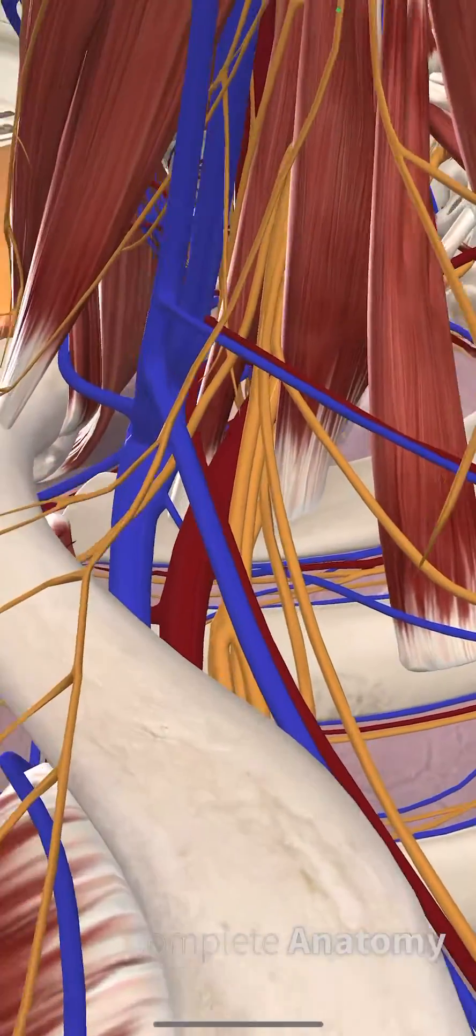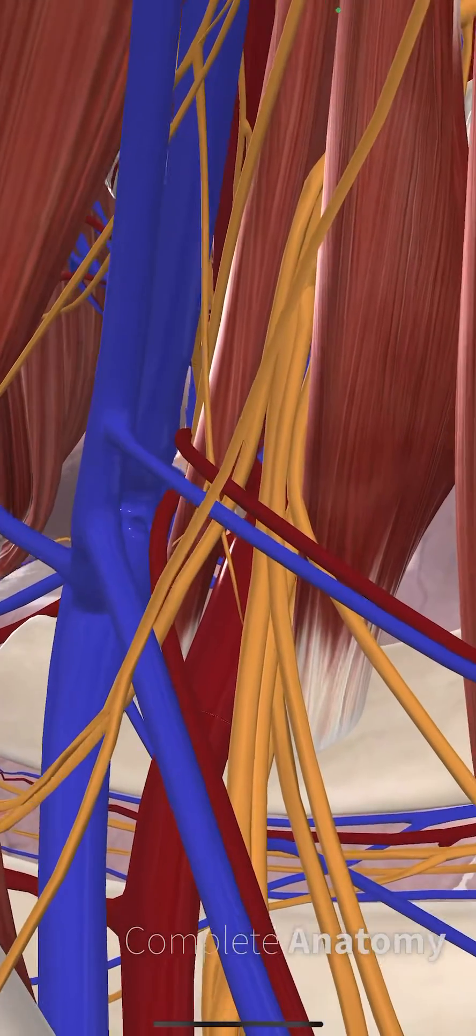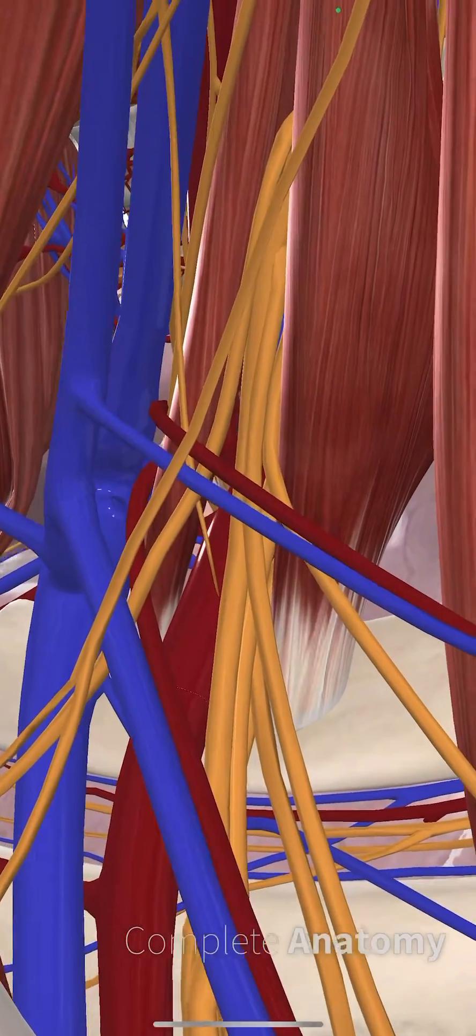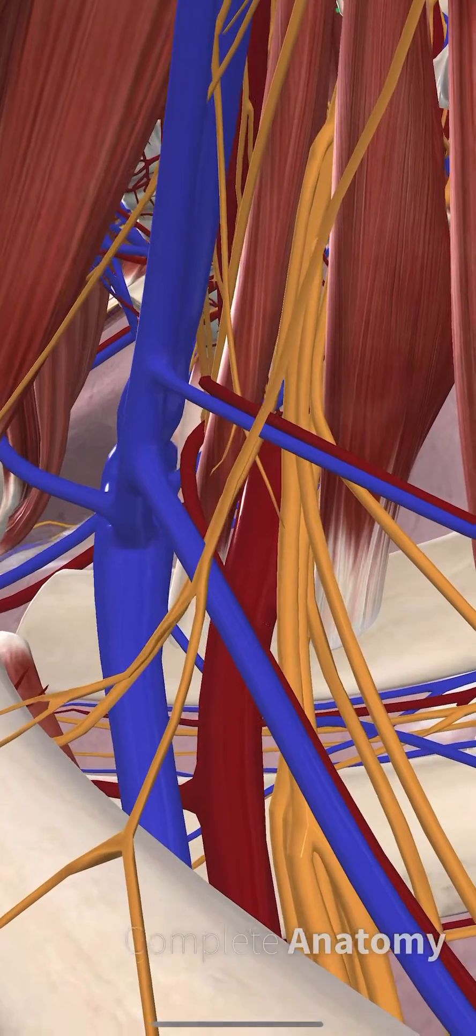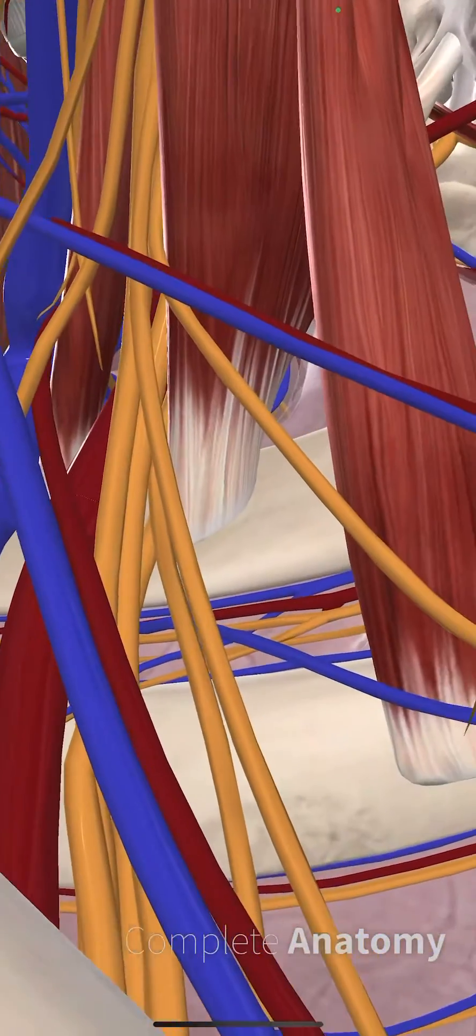But you can see here the proximity of the subclavian artery and the nerves right by the first rib. You can also see the middle scalene muscle inserting here onto the first rib.